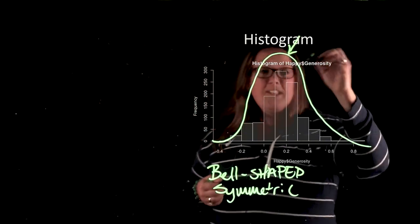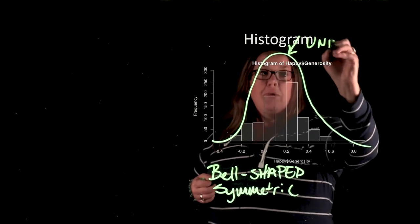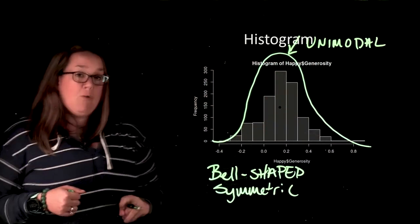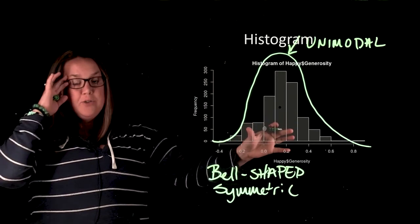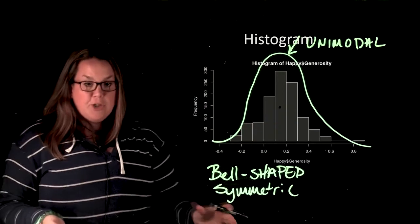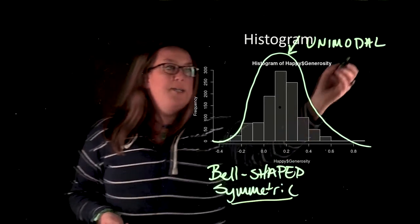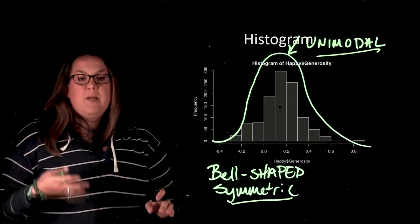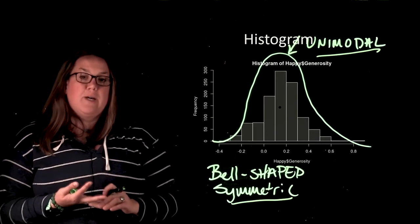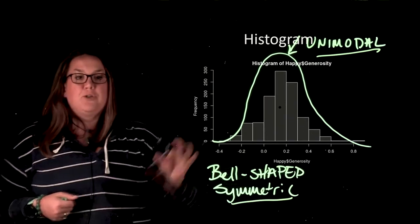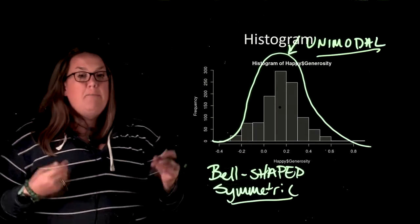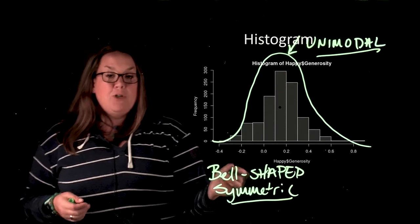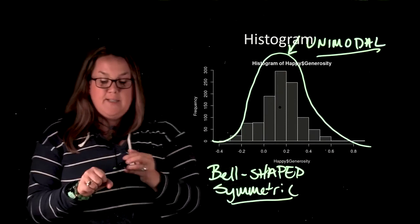Now, this one peak, because it only has one peak, can also be described as unimodal. This is a bell-shaped distribution. It is called bell-shaped because it is symmetric and unimodal. You don't have to say when you're describing something as bell-shaped that it's unimodal and symmetric because in the definition of bell-shaped, those terms are in there. Essentially, unimodal means it has one peak, and symmetric means the right and left hand sides are equal to each other.